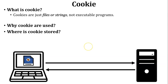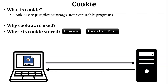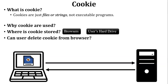Where is the cookie stored? Cookie is stored inside the web browser, which means it is stored inside the user's hard drive, because the browser is installed on the user's hard drive. Can the user delete the cookie from the browser? Yes, obviously the user can delete the cookie from the browser, and can also block cookies through the browser settings.